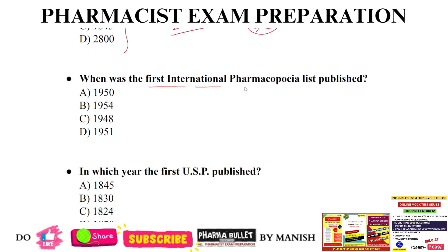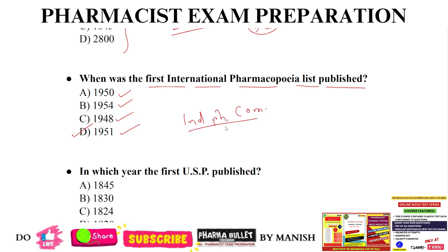Next question: when was the first international pharmacopeia list published? Options: 1950, 1954, 1948, or 1951. The correct answer is 1951, option D — in 1951 the first international pharmacopeia list was published. Then Indian Pharmacopeia is published by which institution? The answer is Indian Pharmacopeia Commission.